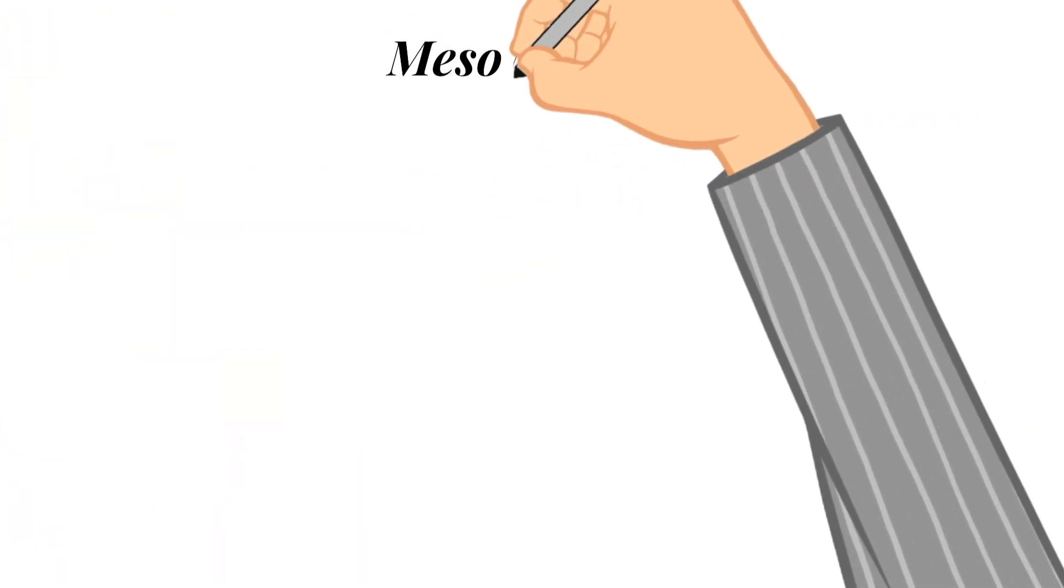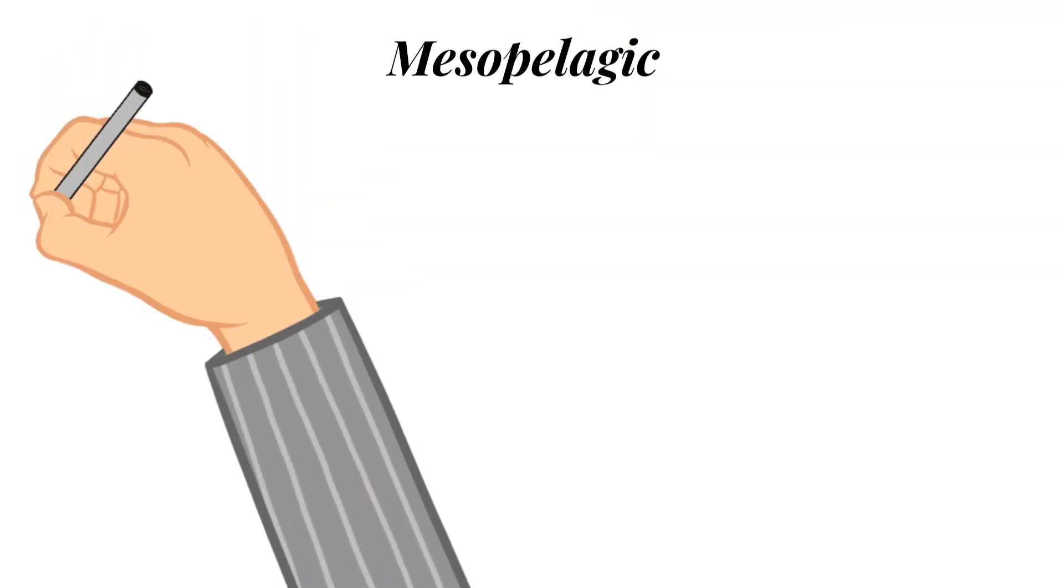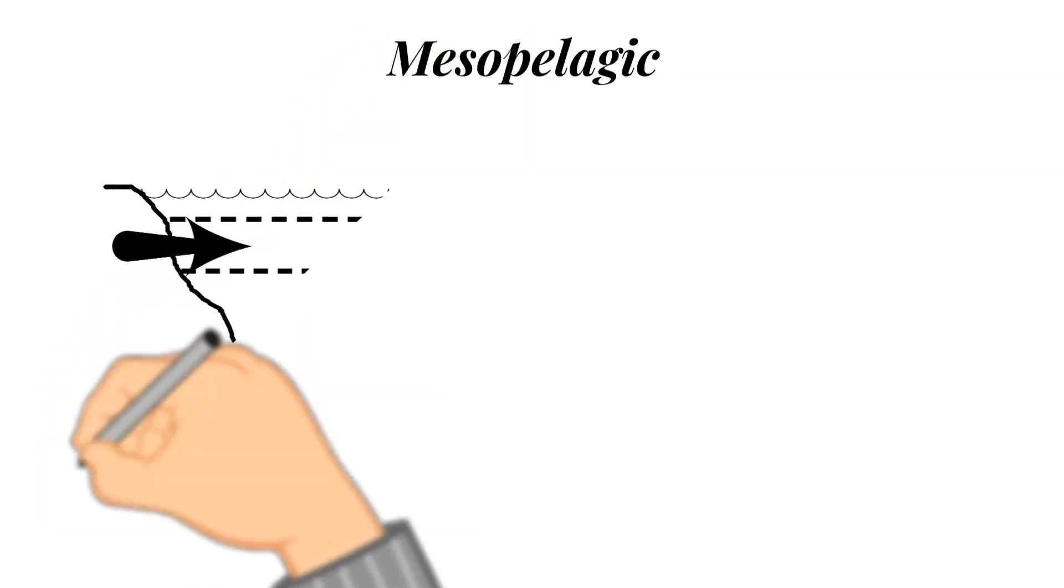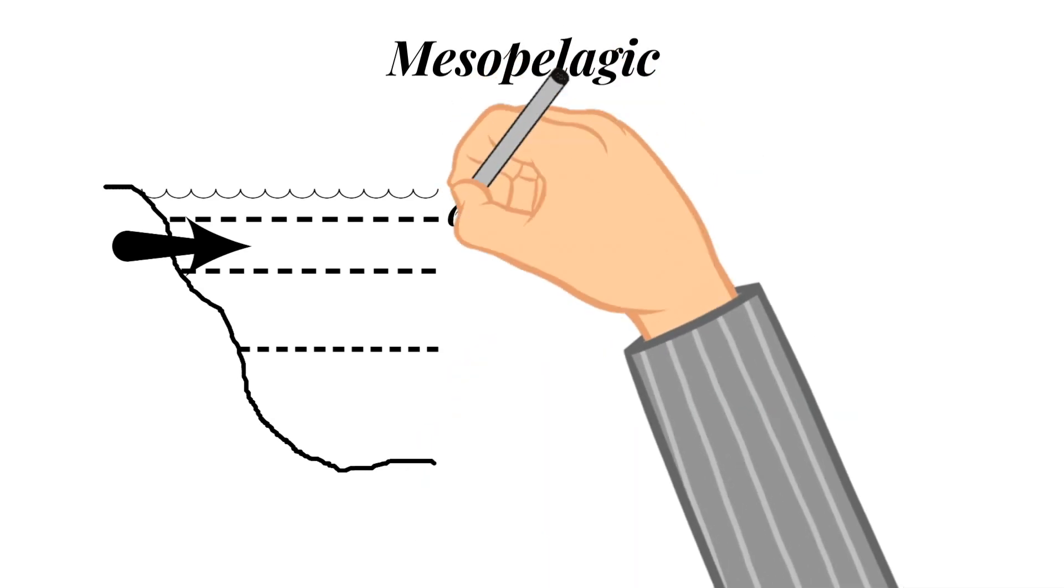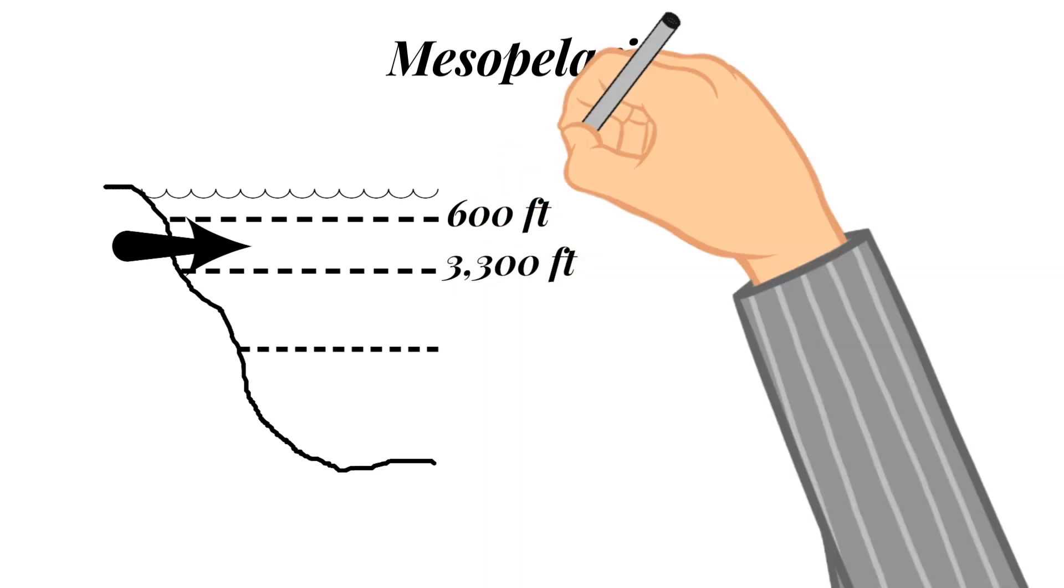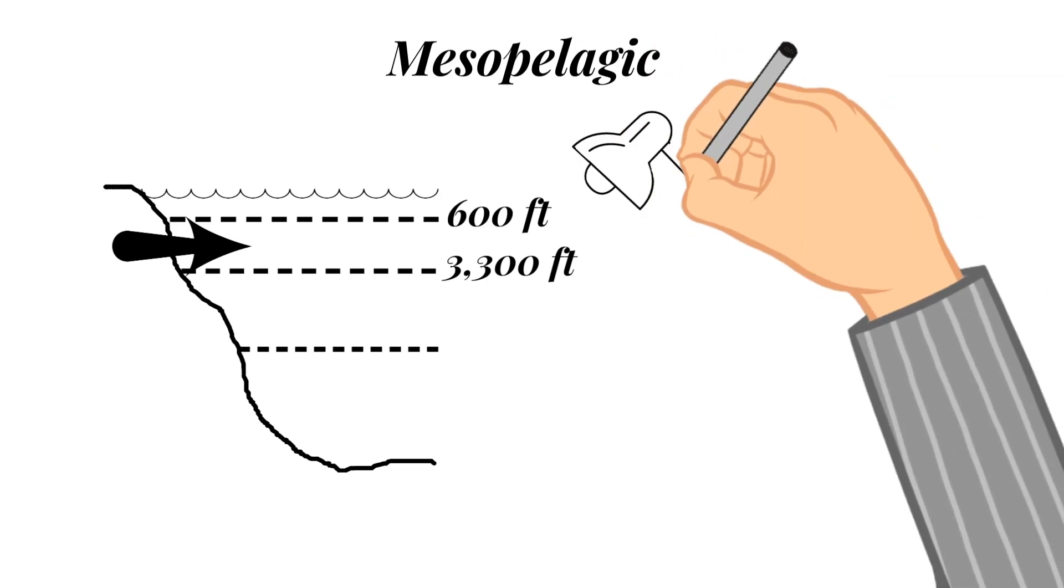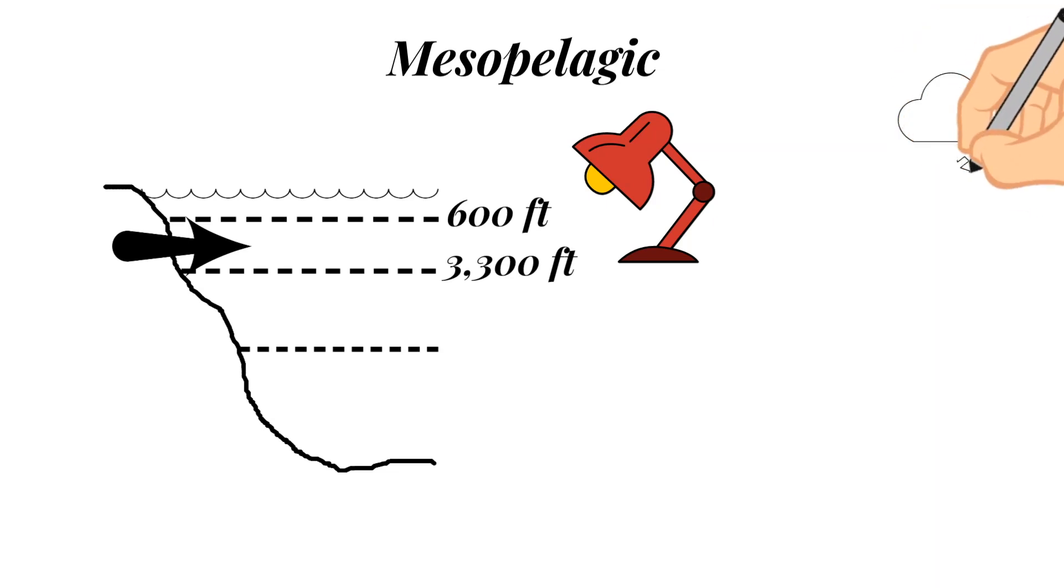Next up, let's talk about the mesopelagic zone. So directly below the epipelagic zone is a mesopelagic zone. And this extends from about 600 feet to 3,300 feet. This zone is sometimes referred to as the twilight zone or the midwater zone because the sunlight does reach this area, but it is very faint. Temperature changes are very great in this zone and rapidly decrease with increasing depth. And this forms a transition layer between the mixed layer at the surface and this deeper water.